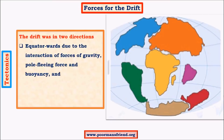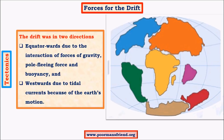The major drawback of continental drift theory is the forces proposed by Wegener — gravity, pole-fleeing force from earth's rotation, buoyancy from oceans, and tidal force — are all too minute in magnitude to shift such great landmasses. This theory is a complete failure when it comes to explaining the forces that led to continental drift.